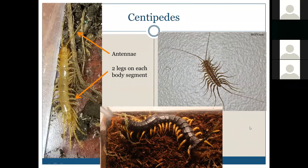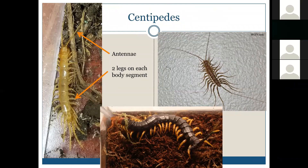The house centipede, seen in the upper right, can sometimes be found indoors. If you see them inside, they are actually a good creature to have, kind of like geckos, because they will help reduce the insects crawling around inside. These are predators that feed on insects and other arthropods — often cockroaches. So depending on how you feel about different things, you may or may not want them in your house.